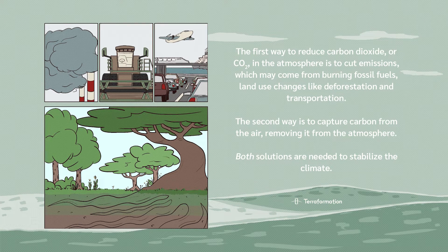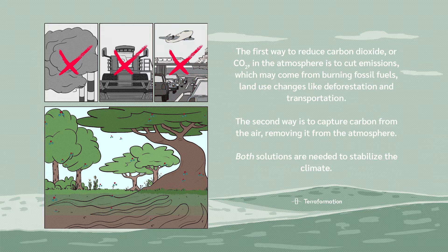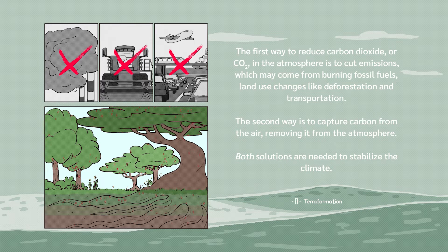The first way to reduce carbon dioxide, or CO2, in the atmosphere is to cut emissions, which may come from burning fossil fuels, land use changes like deforestation, and transportation. The second way is to capture carbon from the air, removing it from the atmosphere. Both solutions are needed to stabilize the climate.